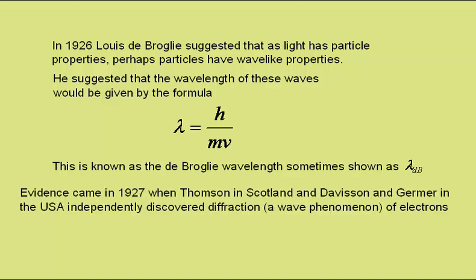Evidence came in 1927, when George Thompson, working in Scotland, and Davison and Germer, working in the USA, independently discovered diffraction, a wave phenomenon, with electrons.